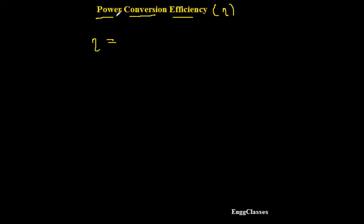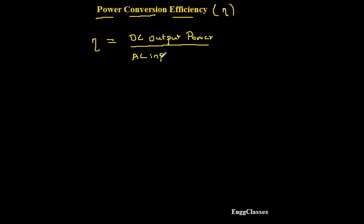In the case of a half-wave rectifier, I will measure this with respect to power, so I write output power divided by input power. The output power is DC output power, and the input power is AC input power. So I can write it as PDC divided by PAC. The definition for efficiency: η = PDC / PAC — efficiency is always output divided by input.